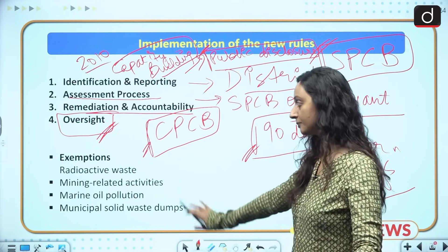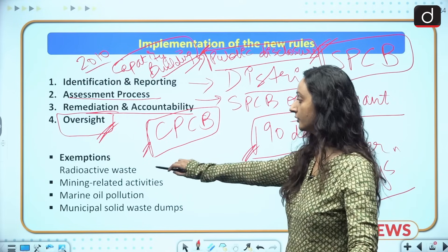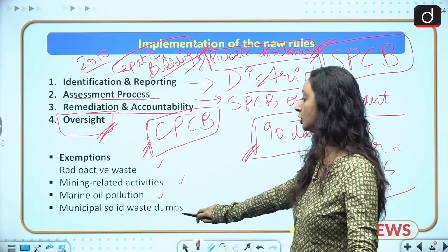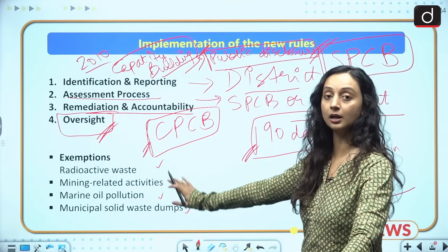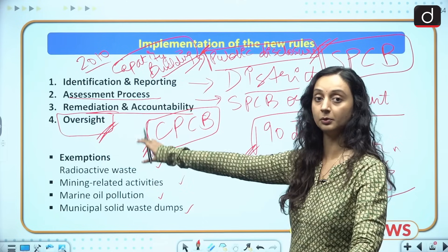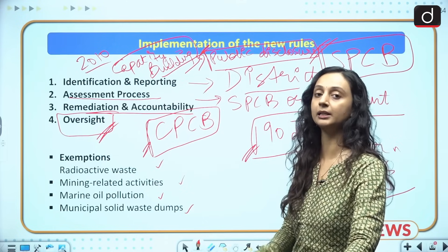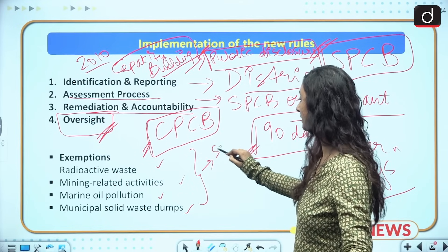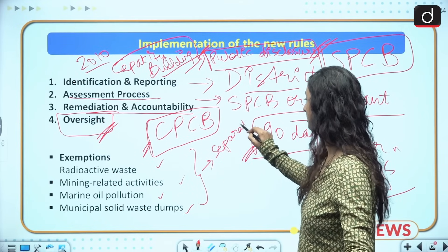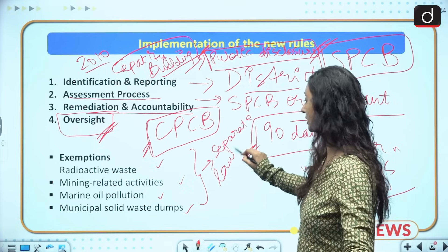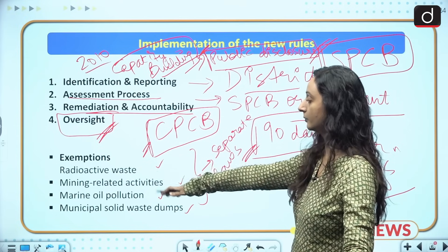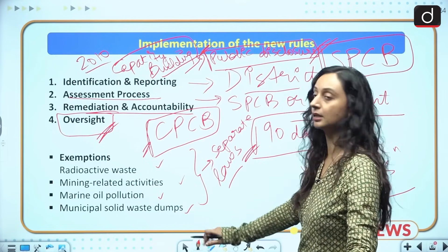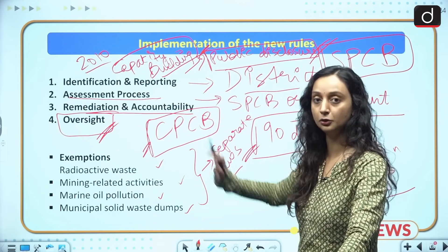There are some exceptions. Radioactive wastes, mining-related activities, marine oil pollution, and municipal solid waste dumps are not covered under the Environment Protection Management of Contaminated Sites Rules, because these are already governed by separate laws. We already have separate legislation to deal with radioactive waste, mining-related waste, marine pollution, and municipal solid waste dumps.